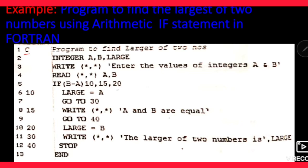These are the executable statement numbers: 10, 15, 20. Agar B minus A ki value negative aati hai, to kaunsi statement execute hogi? Jo statement number 10 pe hai. Aur agar B minus A ki value 0 hai, to statement number 15 execute hogi. Aur agar B minus A ki value positive hai, to statement number 20 will be executed.